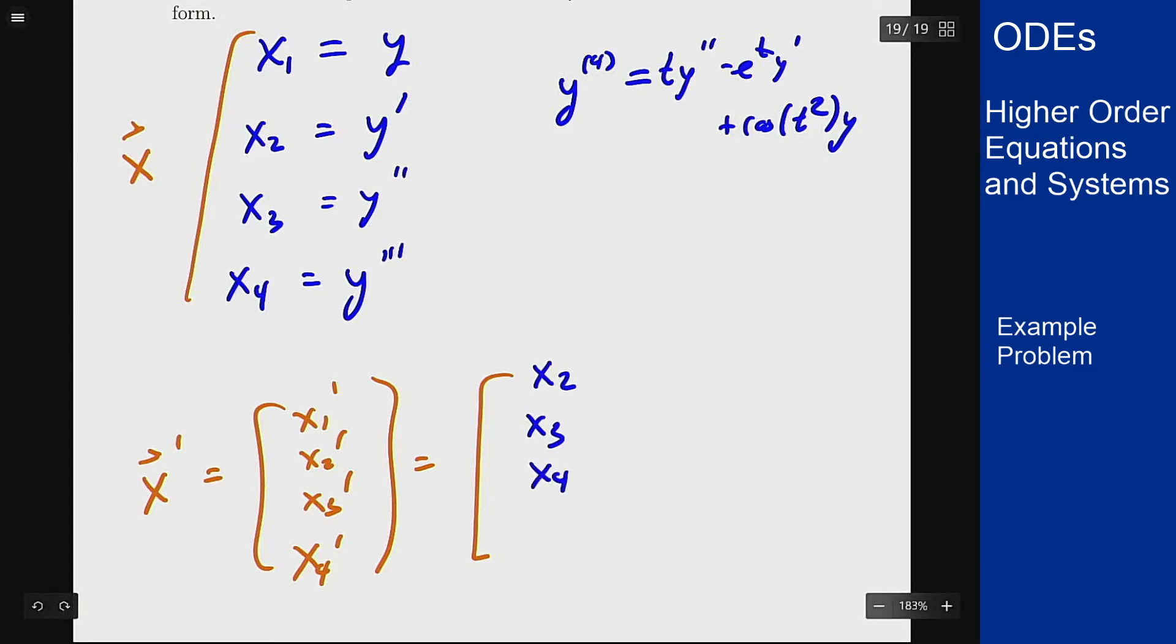And x4 prime is the fourth derivative of y, but I know what that looks like in terms of lower derivatives from my equation. So this will be the same thing as t y double prime is x3 minus e to the t y prime is minus e to the t times x2 and the cosine t squared times y that is cosine of t squared times x1.